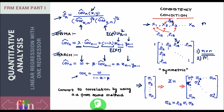The third thing to note about this correlation matrix is that it is a symmetric matrix. The entry ρ₃₁ is the same as ρ₁₃ because it doesn't matter whether you talk about the correlation between the first and third or the third and first asset — it's the same number. So those are the three key properties of the correlation matrix.